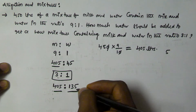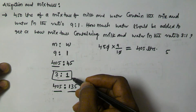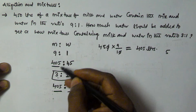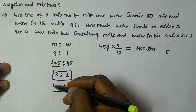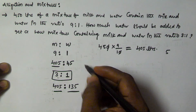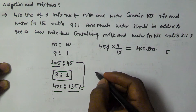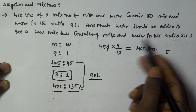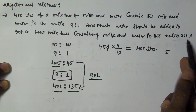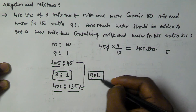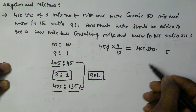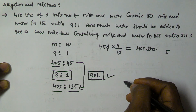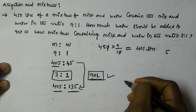So the water should be 135 liters so that the milk and water ratio becomes 3:1. Initially the milk is 405 liters and finally the milk is still 405 liters. The water has increased from 45 to 135 liters, so the difference is 90 liters. Therefore, 90 liters of water should be added to the mixture. I hope you got this one — thank you very much for watching and please subscribe to my channel.